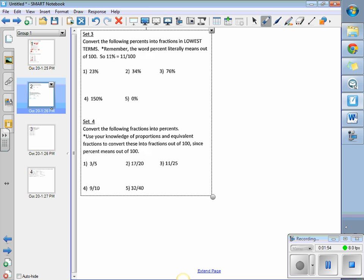Moving on. The first one for set 3 asks us to convert to a fraction in lowest terms. So 23% means 23 out of 100. We just write 23 out of 100, and then we simplify it if we can. We've been working on fractions and simplifying them, so this should not be that difficult.